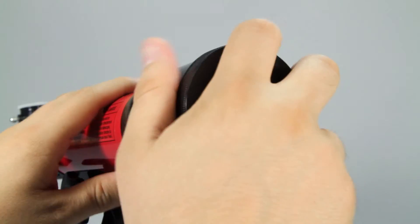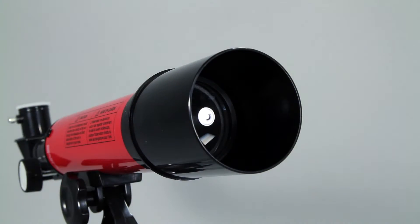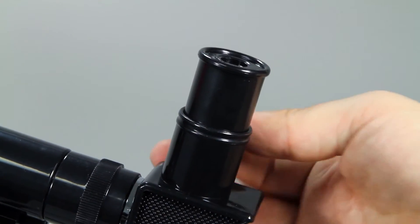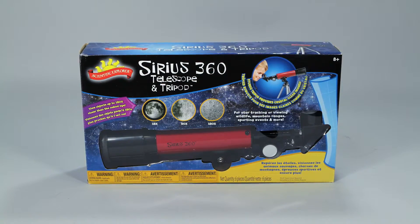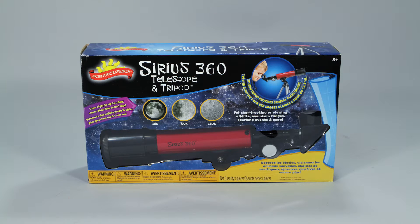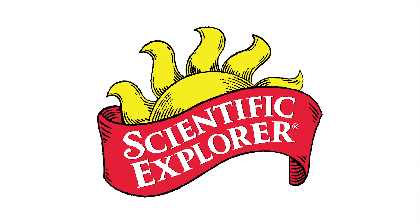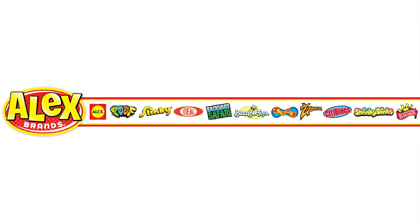Simply set up the tripod, pop the telescope on the top, and start stargazing. Scientific Explorer's Sirius 360 telescope and tripod is recommended for ages 8 and older. Scientific Explorer is a member of the Alex Brands family.